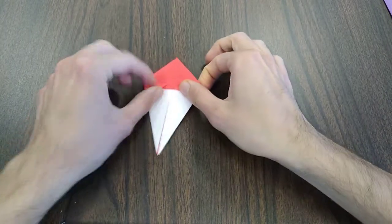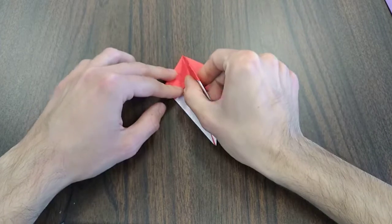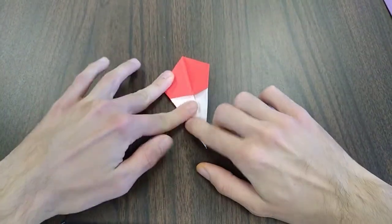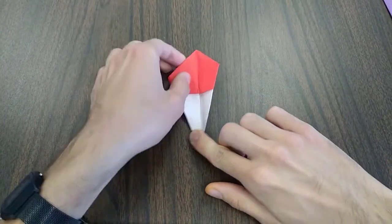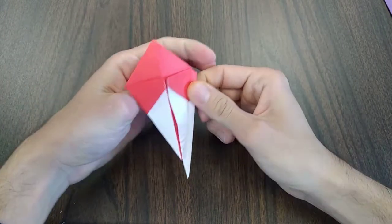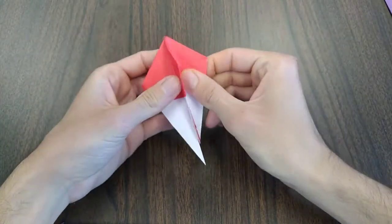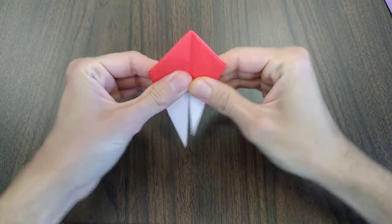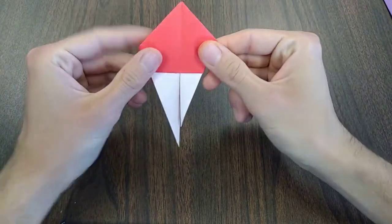So now, we're going to fold this flap so it meets the center crease. So we're going to fold this there, and we're going to want these two flaps to also meet. So your model should look like this.